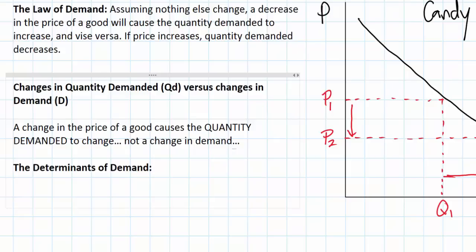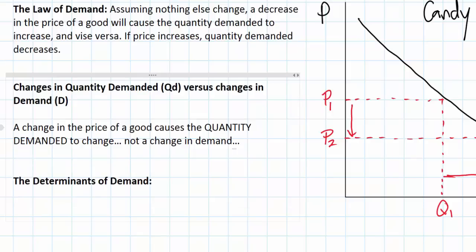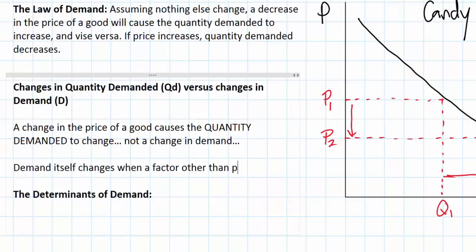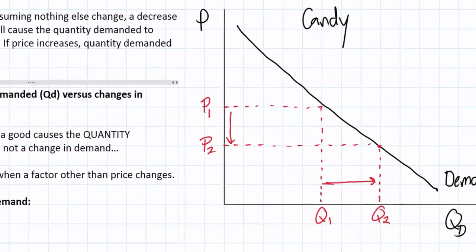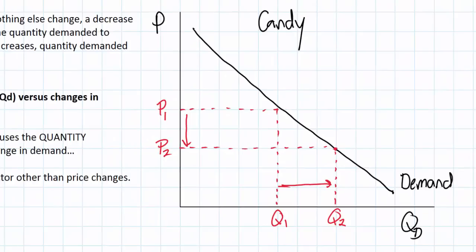There is an inverse relationship between price and quantity demanded. However, the demand itself changes when something other than price changes. Before we get into the factors that can cause a change in demand, let's illustrate what a change in the demand for candy would look like. Our original demand curve — the one that is just called demand and is drawn in black — represents the quantities that my 68 students were willing and able to buy at a range of prices in a week. A change in the demand for candy would be illustrated as a shift in the demand curve.